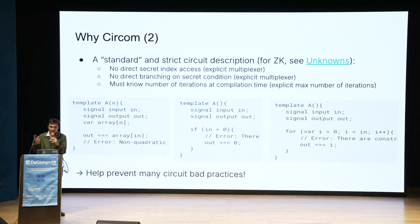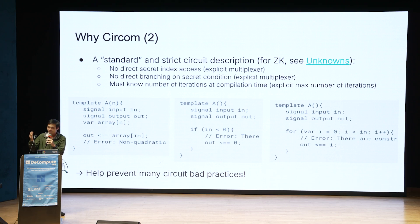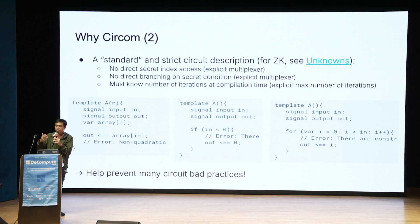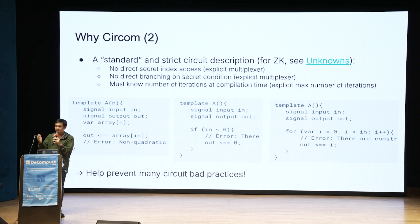You cannot do an unknown number of iterations — you must know the number of iterations at compile time. You can specify the max number of iterations and do dummy steps after that, depending on how you write the circuit. In this way, the CIRCOM language helps prevent many circuit bad practices.